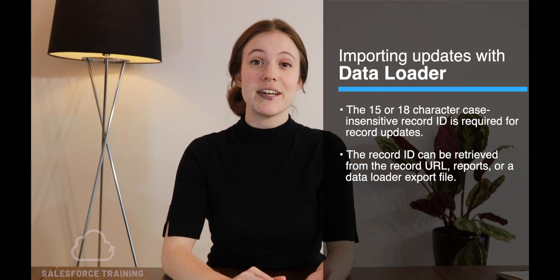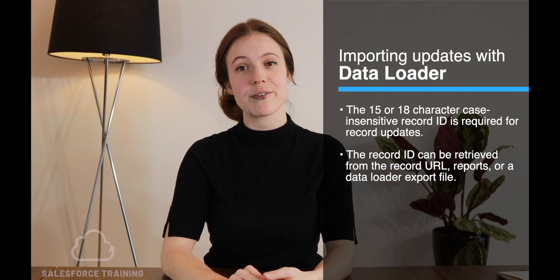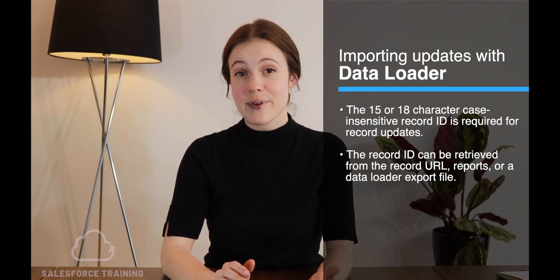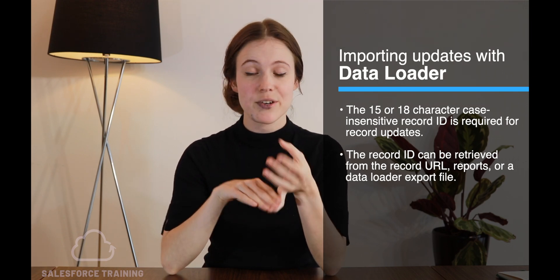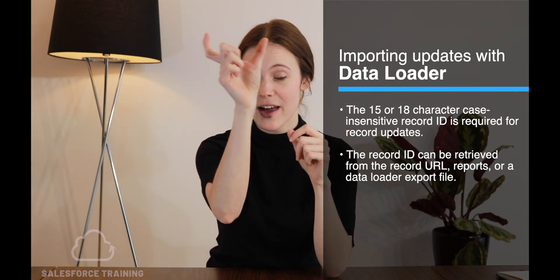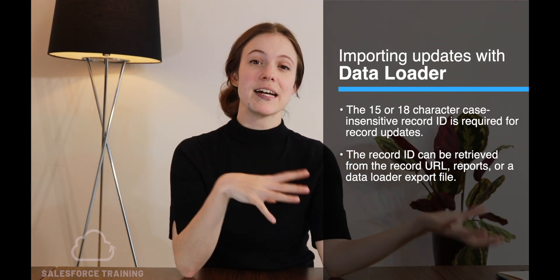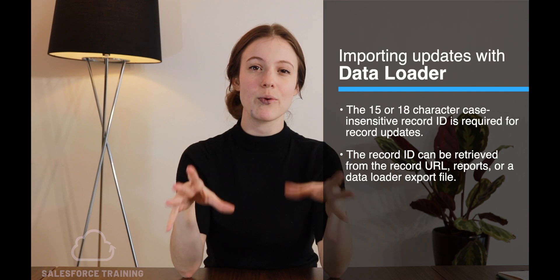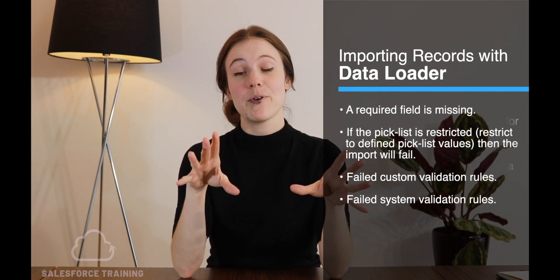If you're importing data using Data Loader, you need to be aware of what might cause a data import to fail. When using Data Loader, you need to have the 15 or 18 character case-insensitive record ID for that record. You can find a record ID in the URL when you're in a particular record, using reports, or by doing an export from Data Loader which will retrieve all of those record IDs for you.